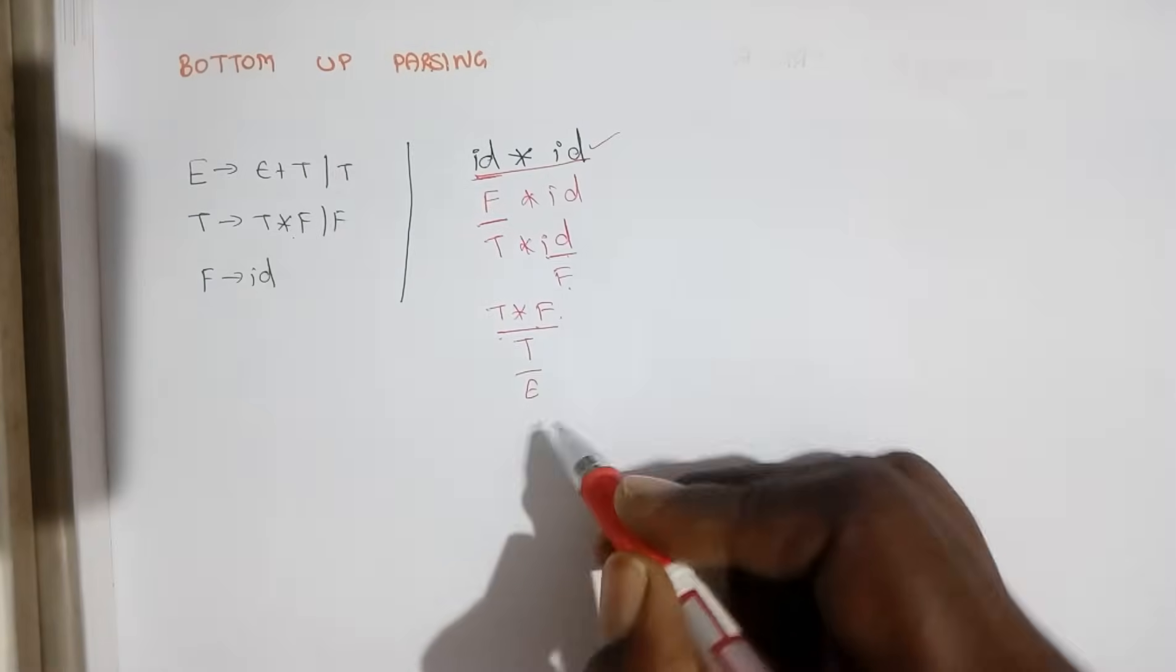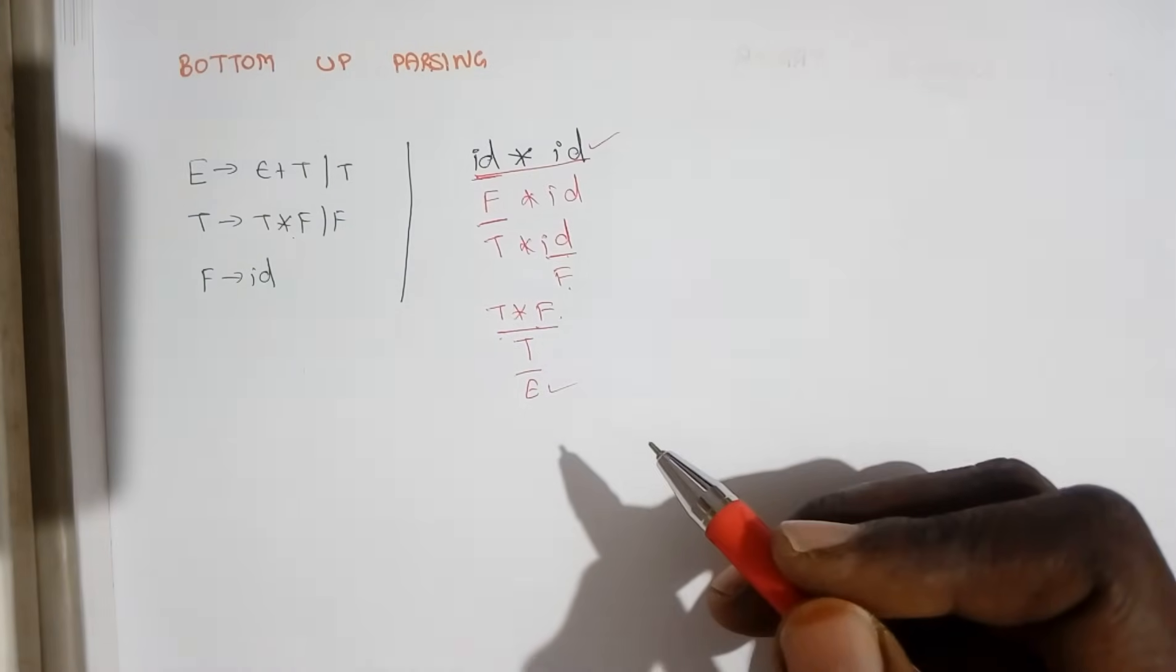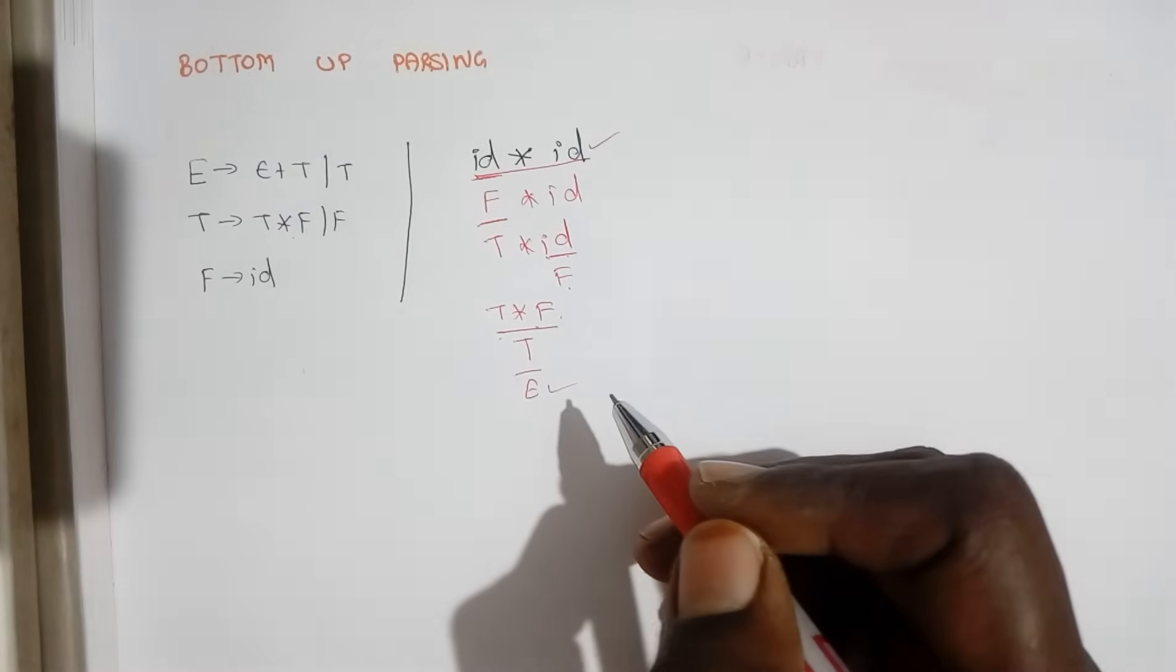So we start with the input symbol and when you derive the starting symbol, we call this type of parser as a bottom-up parser.